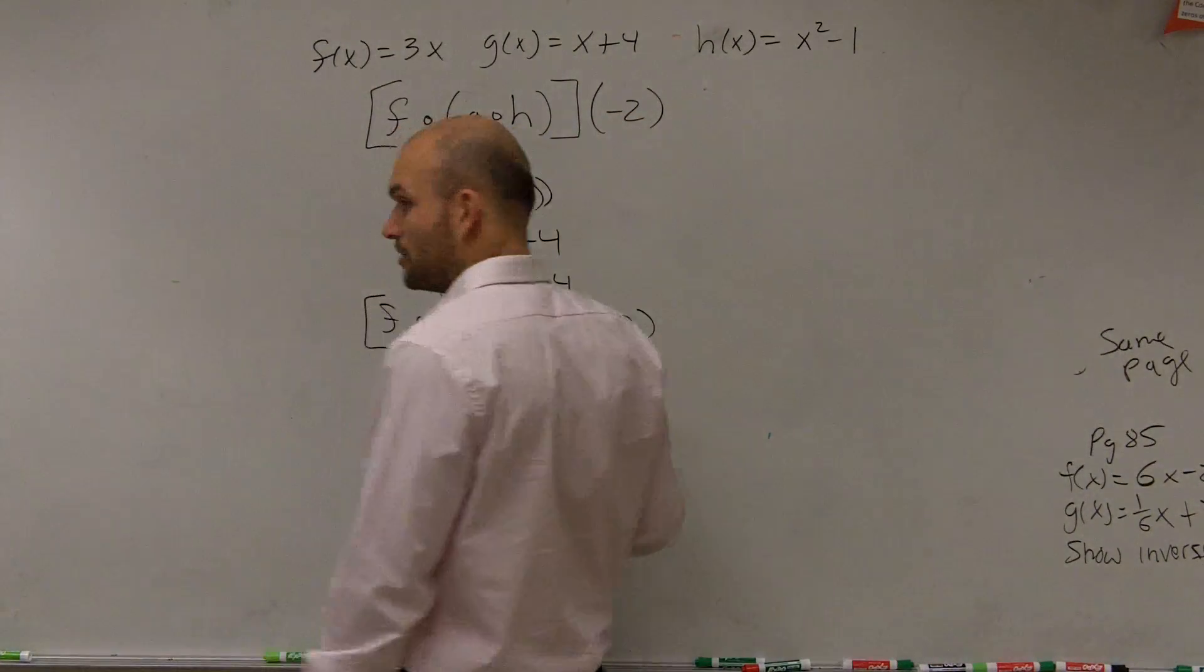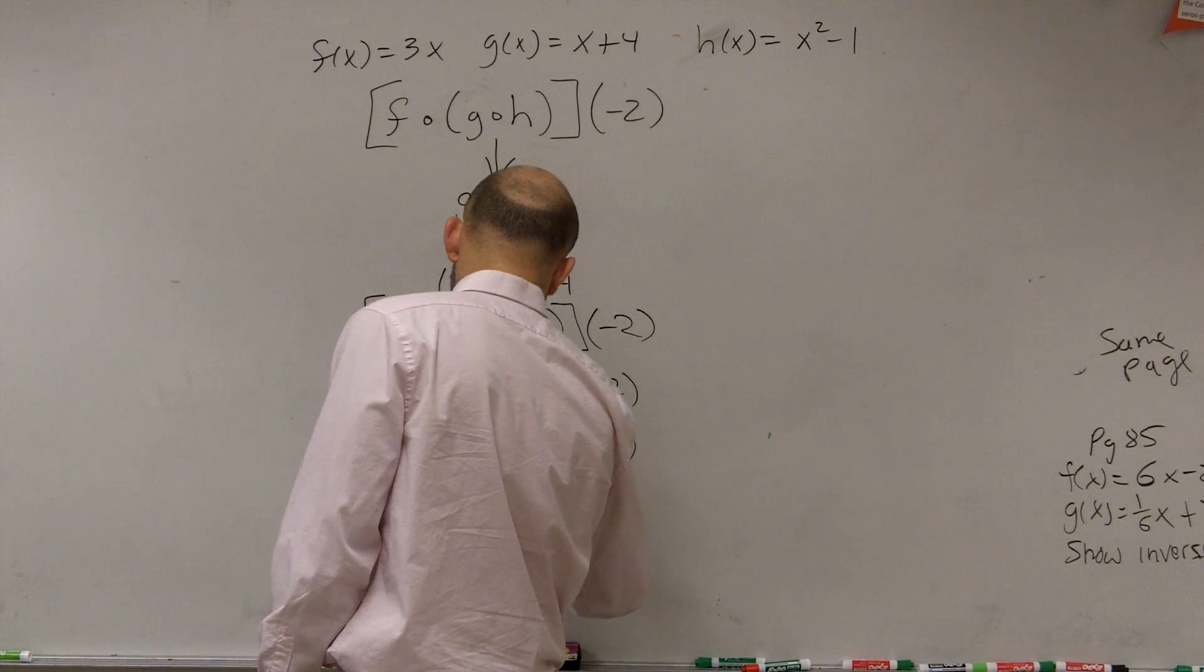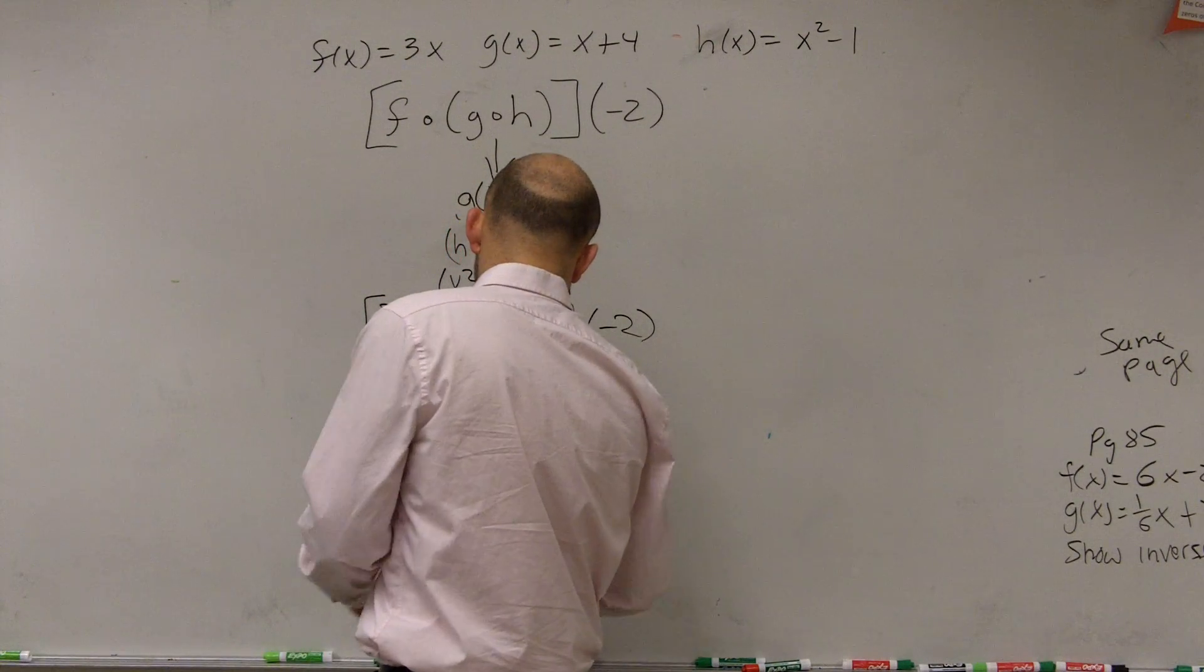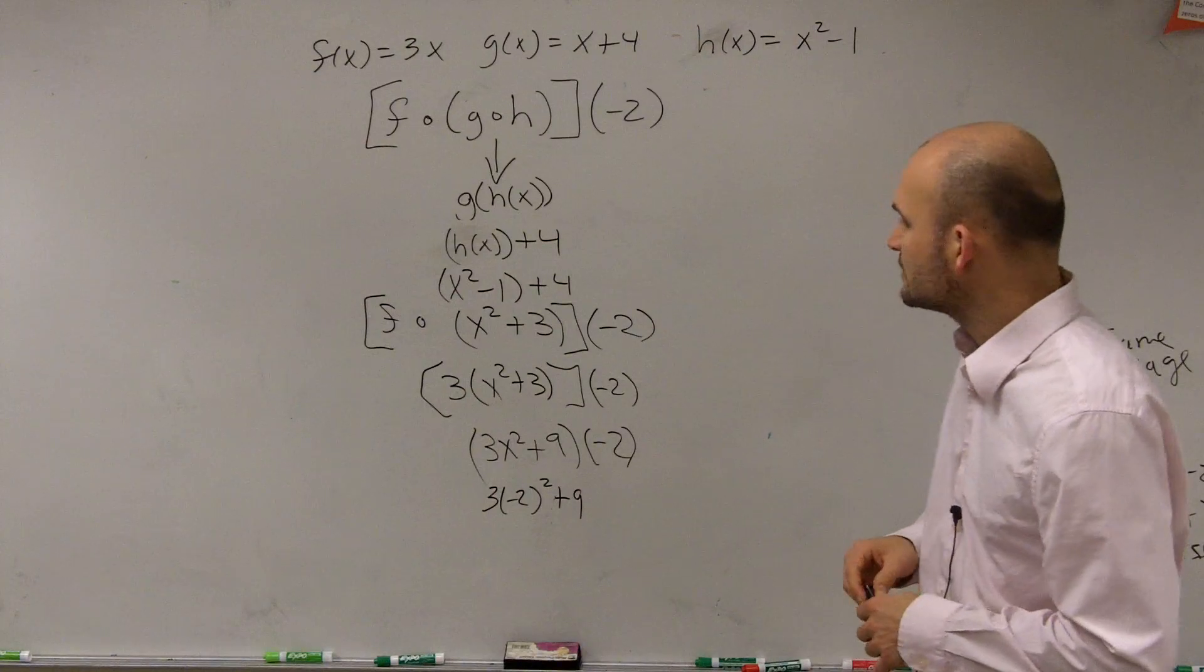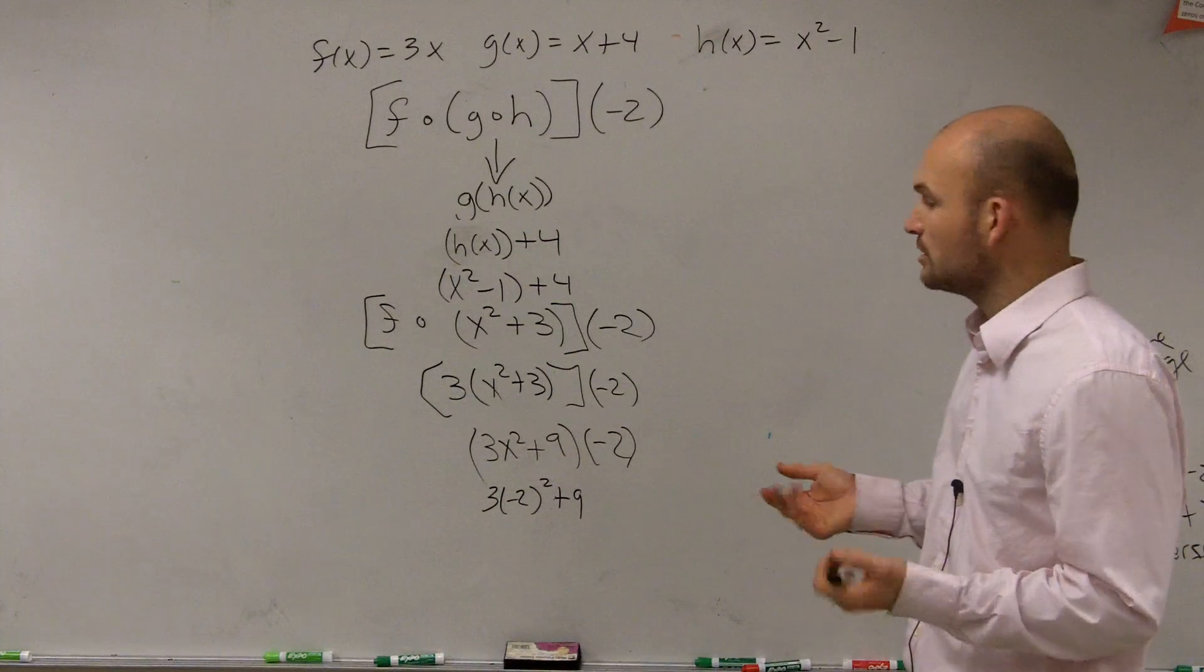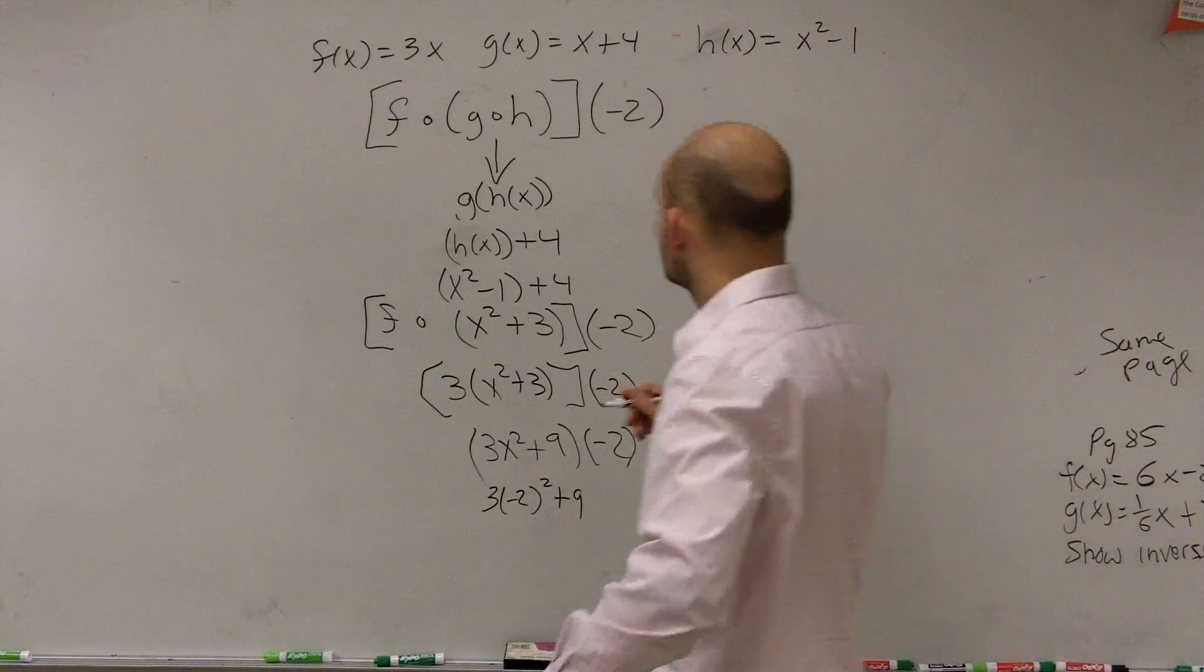So therefore, you just plug in negative 2 for x. So now we have negative 2 squared, which is 4. 4 times 3, which is 12. 12 plus 9, which is 21.